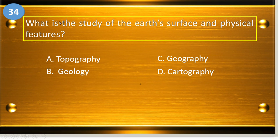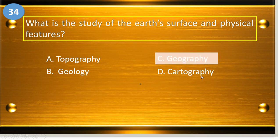Number thirty-four: what is the study of the Earth's surface and physical features? A, topography; B, geology; C, geography; and D, cartography. The answer is geography.